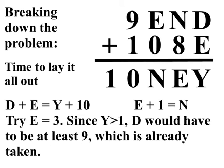How about E equals 3? Reasoning here looks a lot like the reasoning on the previous example. Y plus 10 has got to be at least 12, which would mean that if E were 3, D would have to be at least 9, and since 9 is already taken, that wouldn't work either. So, E is not 3.